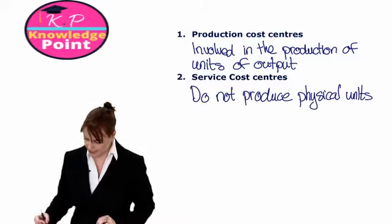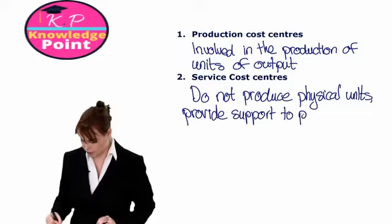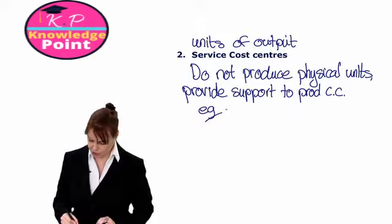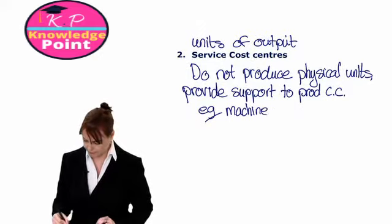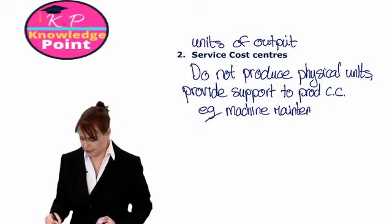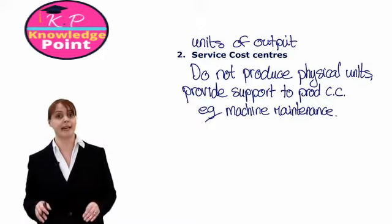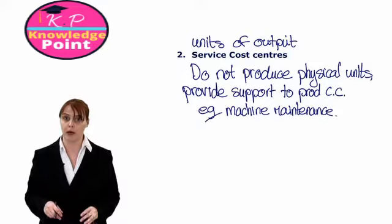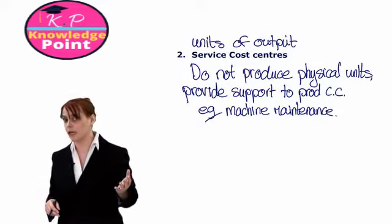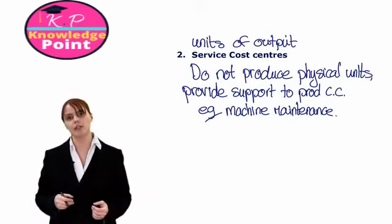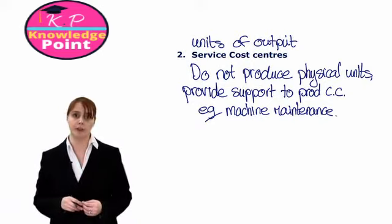Instead, service cost centres provide support to the production cost centres. For example, we might have a machine maintenance department consisting of a number of engineers. When one of the machines breaks down, someone from the machine maintenance department will go along to the production cost centre and get them back up and running. So they are part of our factory environment, but they do not produce physical units of output.